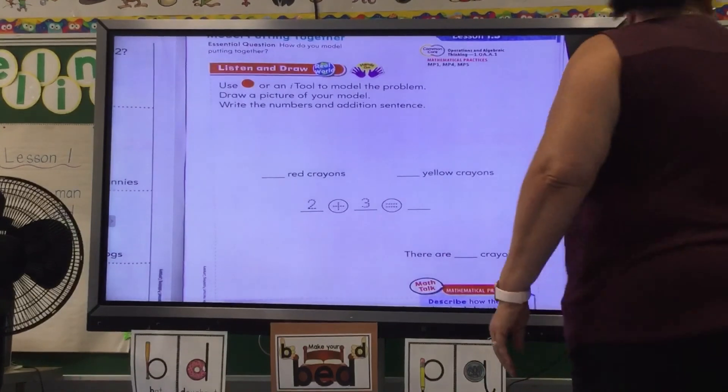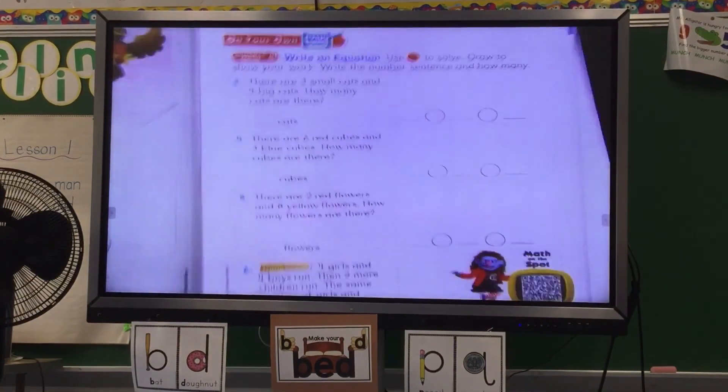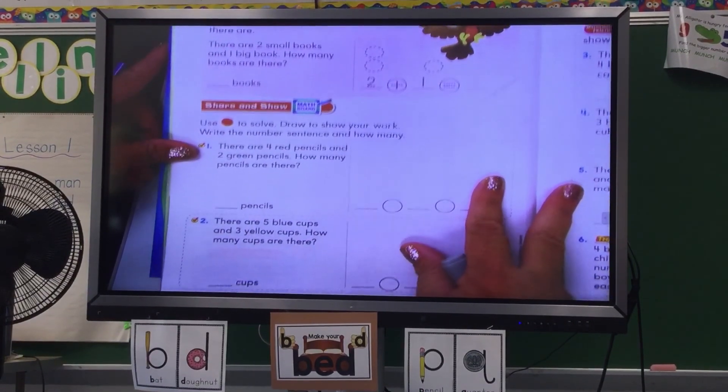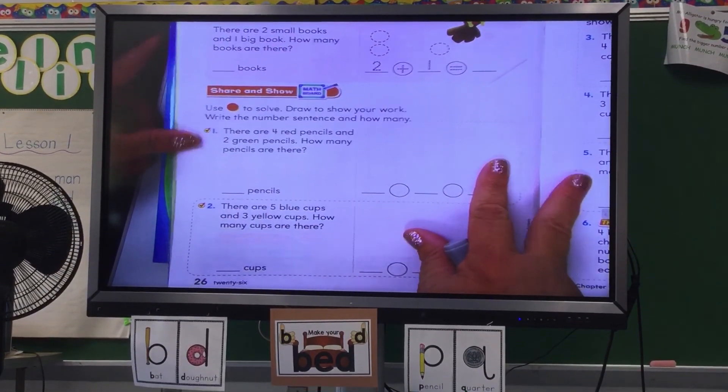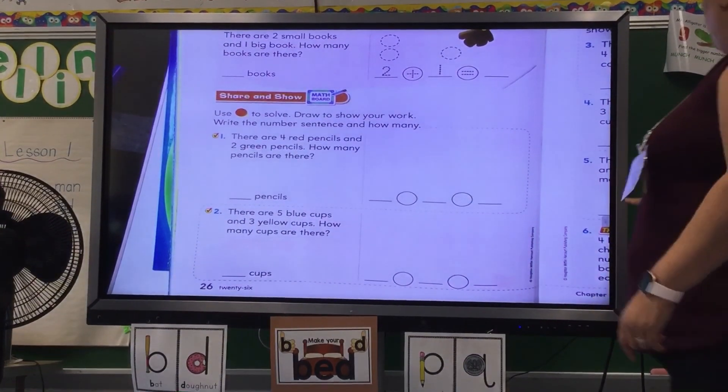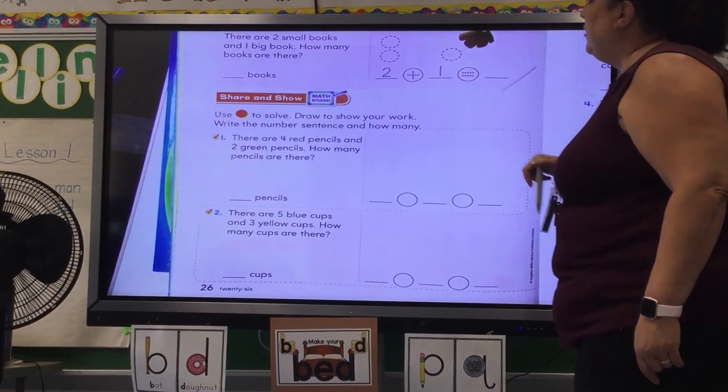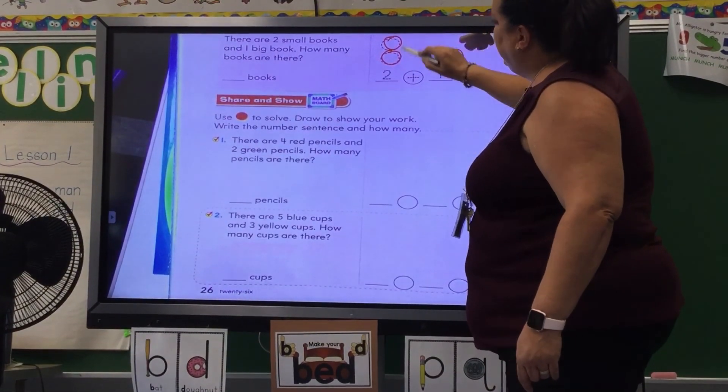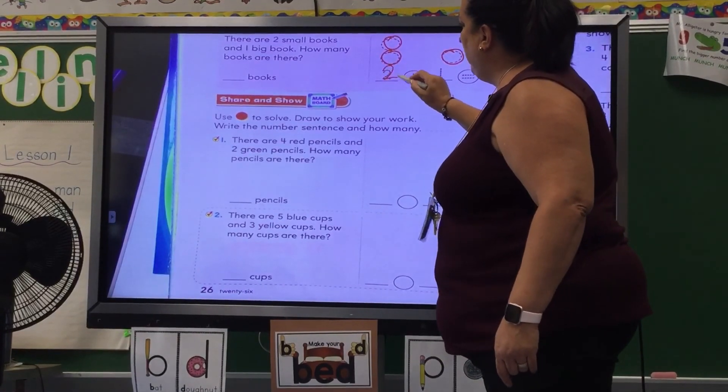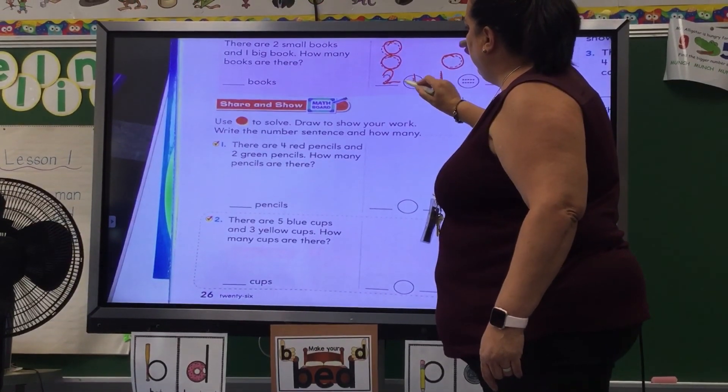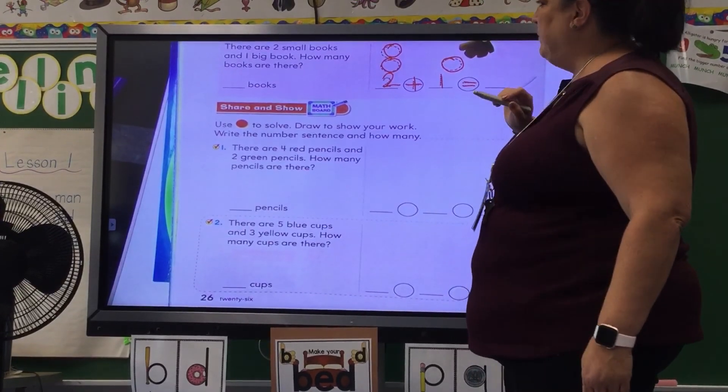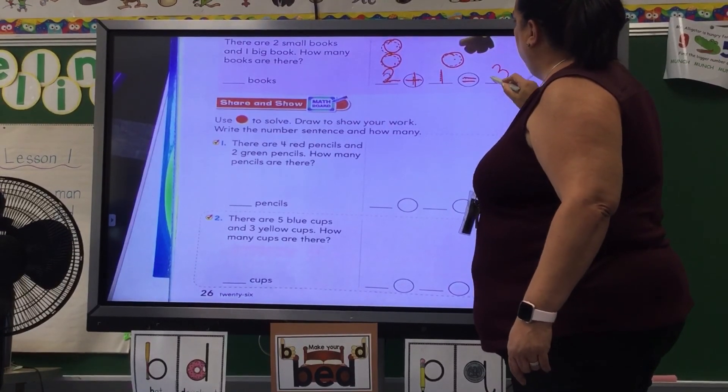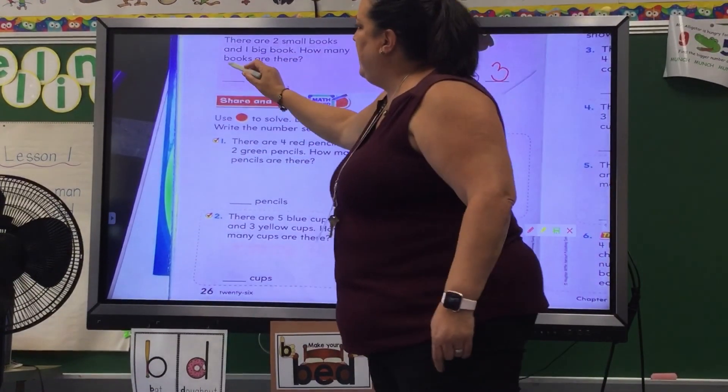Turn the page. Add to find out how many books there are. There are two small books and one big books. How many books are there? So I have two small, one big and see they drew circles for them. Two small, one big. I have to put my plus and equal sign in. What is my sum? Two plus one. Let's count. One, two, three. Three on the line. Three books.